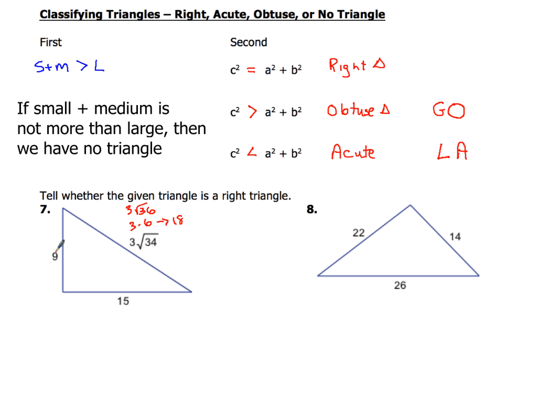Now if I add up 9 and 15, those two values are definitely going to give me something more than a little bit less than 18. So I do have a triangle, so then I've got to get after it and figure out if it's a right triangle, acute triangle, or obtuse triangle. And this is how I want you guys to set this up.